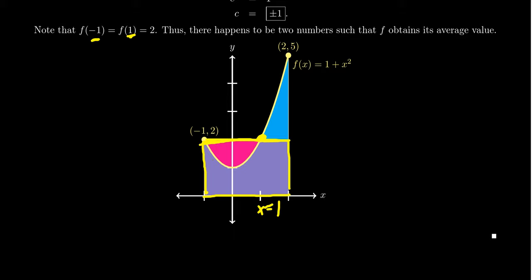We can always turn the area under a curve into a rectangle using the average value, and that brings us to the end of our discussion of average value. It's a short but elegant section. If you have any questions, please post them in the comments below — if you're watching through a learning management system like Canvas, you may need to open the YouTube page directly. Please click the like button, subscribe to see new videos in the future, and I'll see you next time. Keep on calculating, everyone!